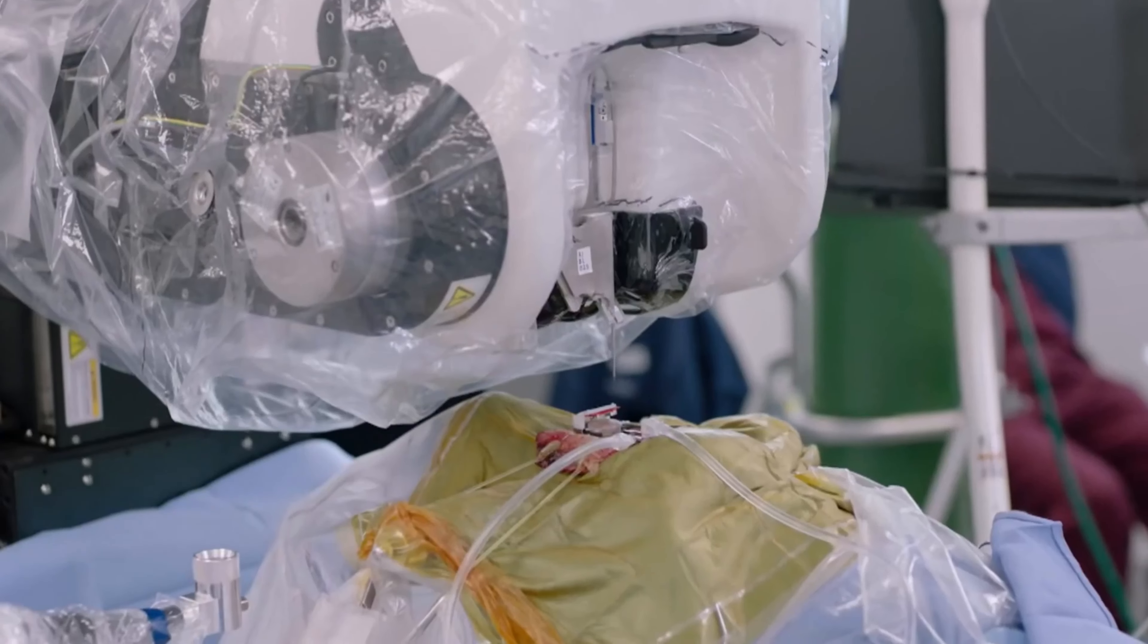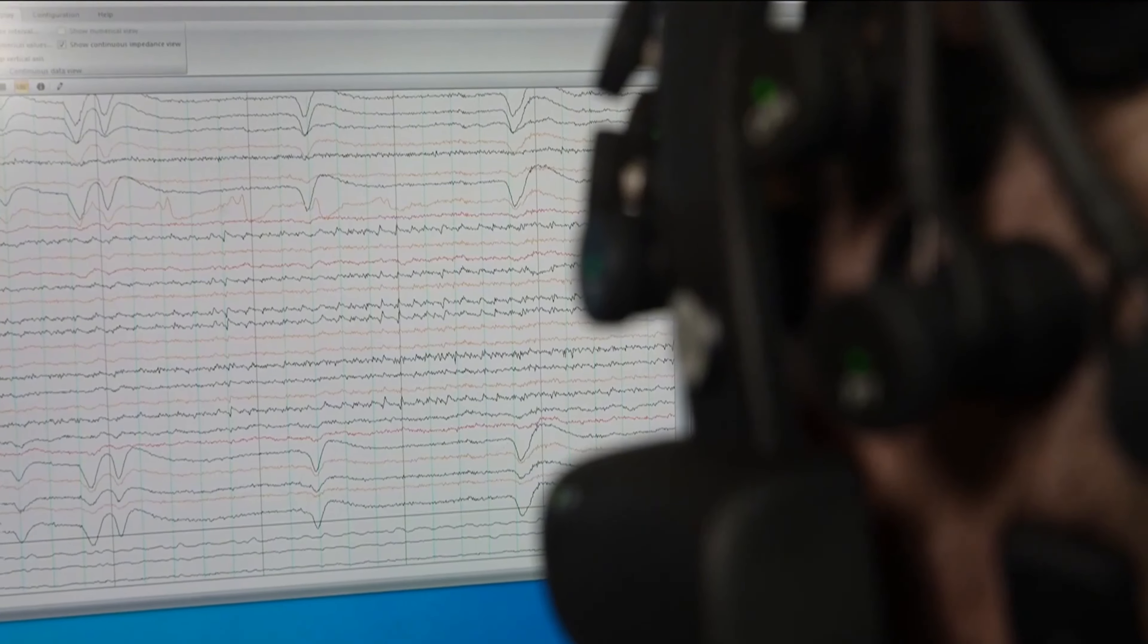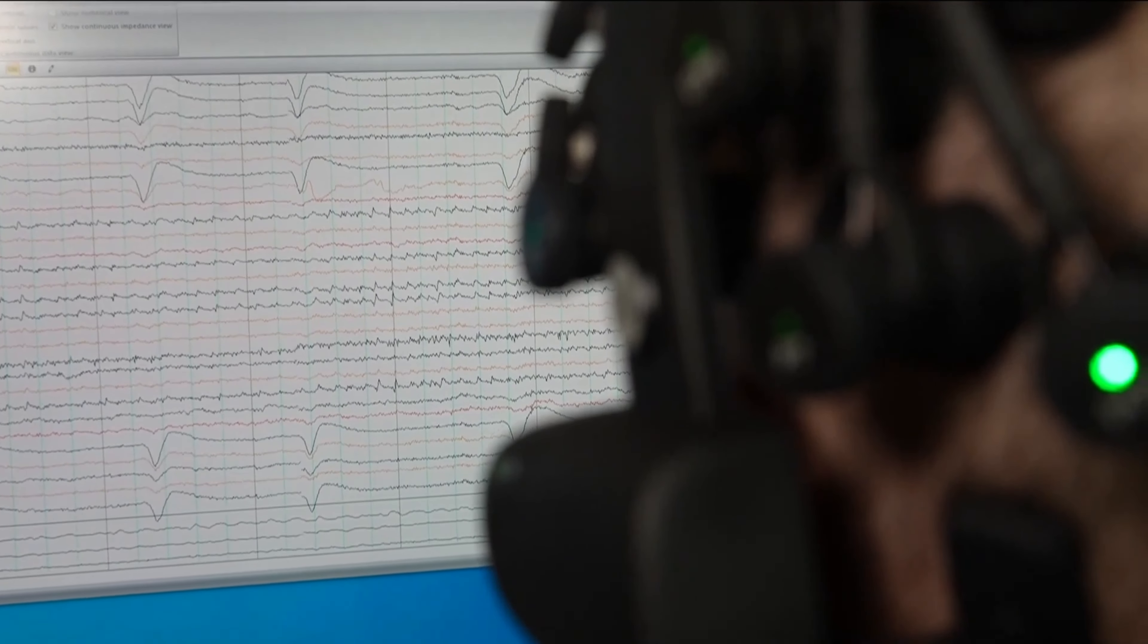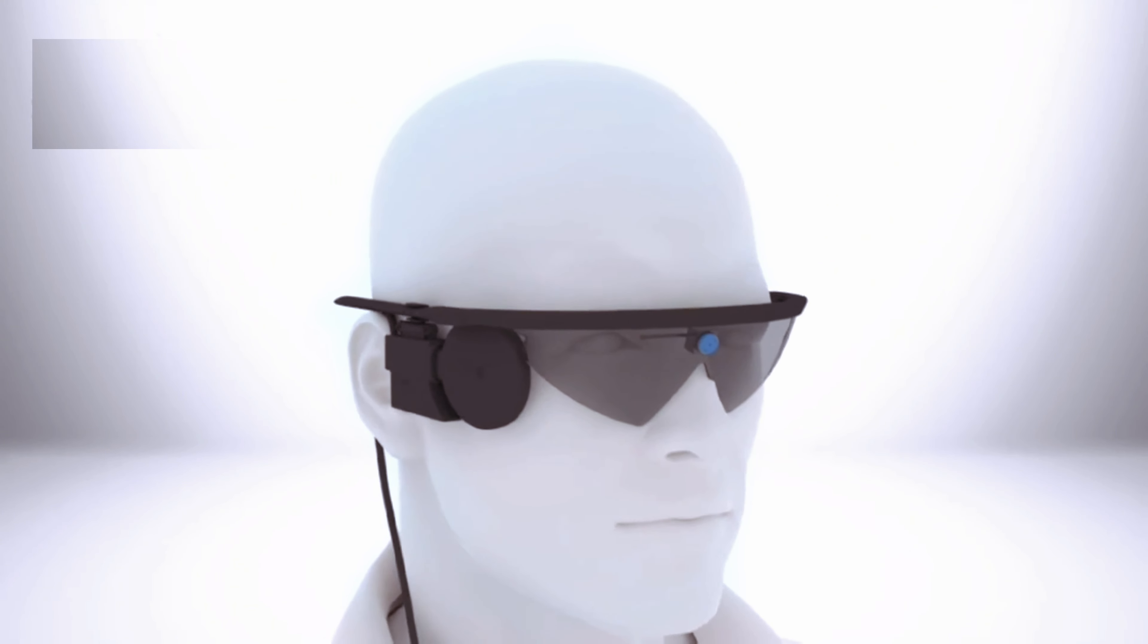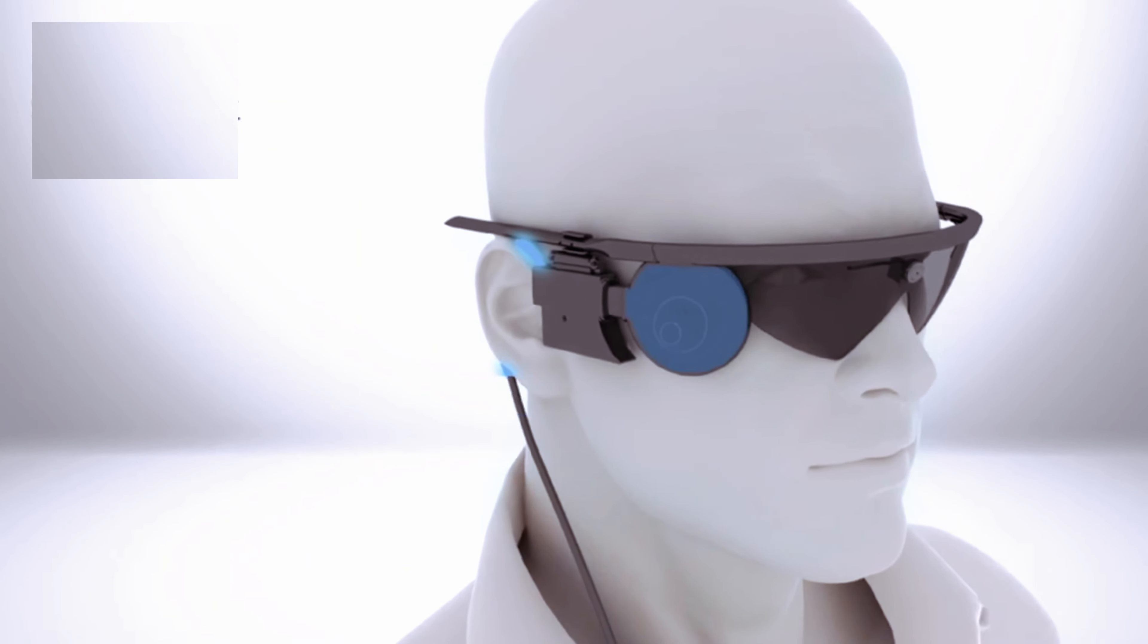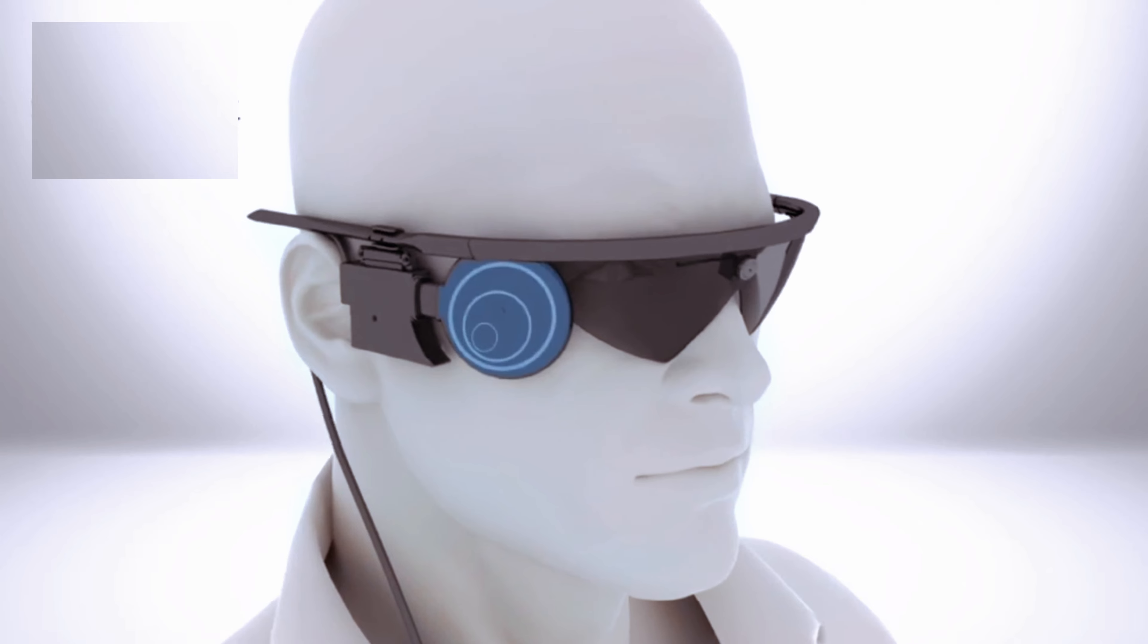But before Neuralink installed their first BCI in a human, there was a company called SecondSight. SecondSight's Argus implant, known for its groundbreaking development of the Argus II retinal prosthesis, caught our eye because it worked to provide bionic vision to patients with vision impairments. The Argus II, approved by the FDA in 2013, was a significant milestone in the field of vision restoration technology.